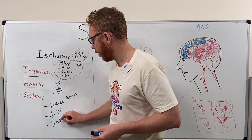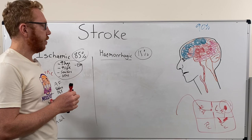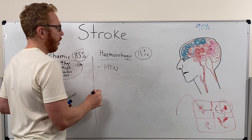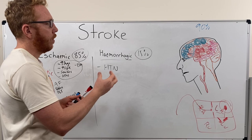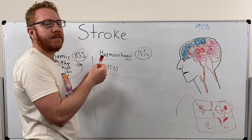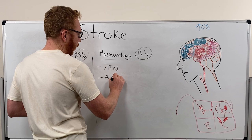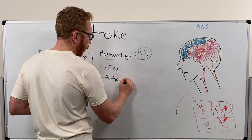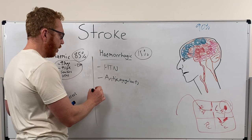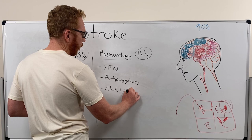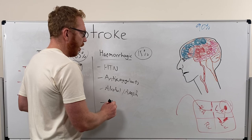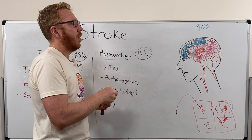Finally, moving to haemorrhagic risk factors — the greatest one by far is hypertension. High pressure within the blood vessels causes structural changes and weakening, which can lead to rupture. Other risk factors include patients taking anticoagulants such as warfarin and heparin, certain drugs like alcohol and amphetamines, and arteriovenous malformations — abnormalities in the way blood vessels formed within the brain, likely a congenital abnormality.